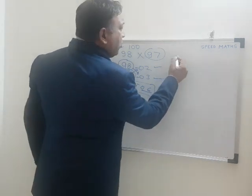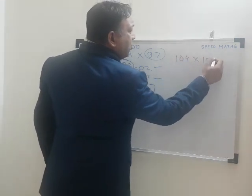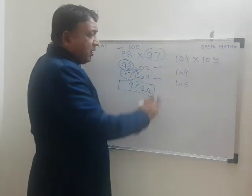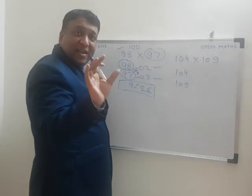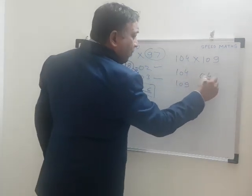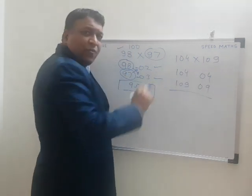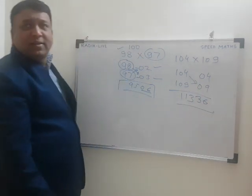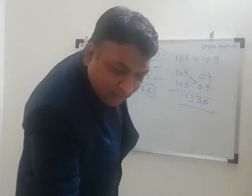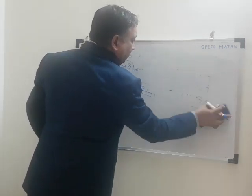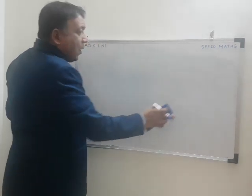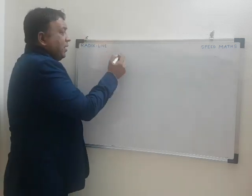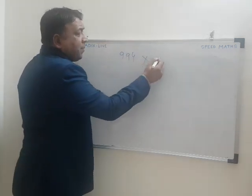Let's take another example: 104 into 109. Can we do it? Yes, we can — it's the same steps. 104 minus 100 gives 4; 109 minus 100 gives 9. Now 4 into 9 equals 36. For the left part: 104 plus 9 equals 113. So the answer is 11336.